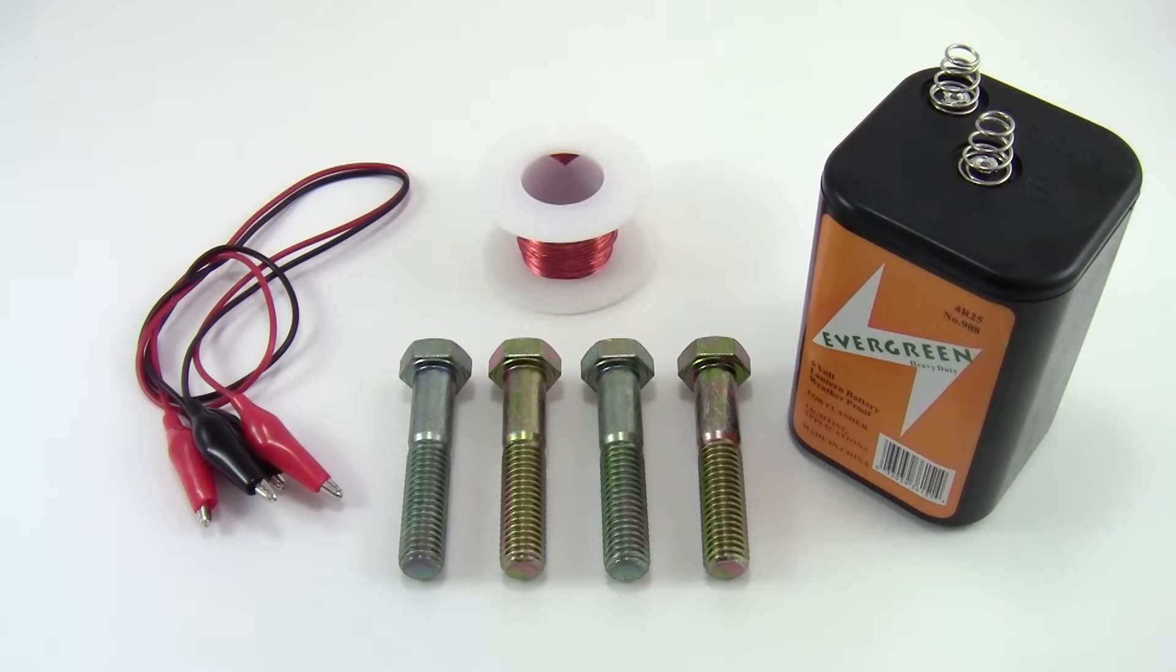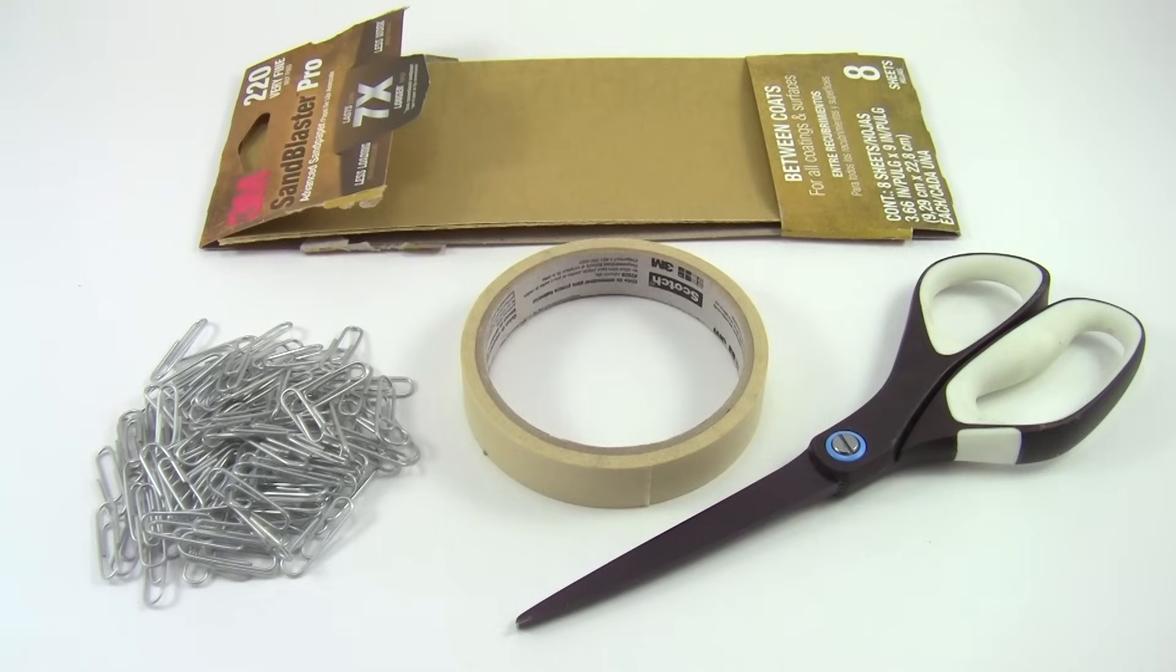A kit with all the parts you need to build four electromagnets is available from Science Buddies. You will also need these materials not included in the kit.